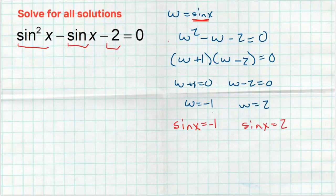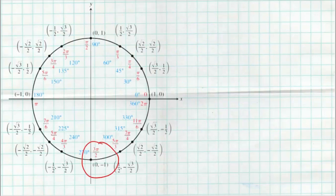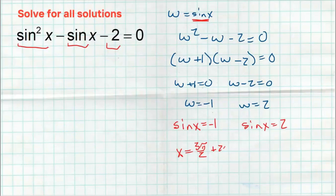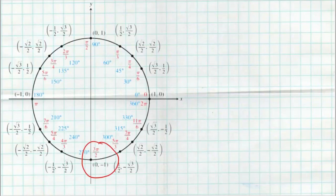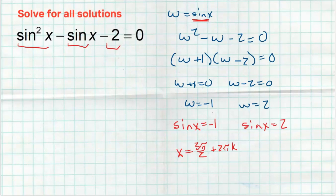Where is sine of x equal to negative one? That happens at three pi over two. Since it wants all solutions, every full circle rotation gives another answer, so three pi over two plus two pi·k. Now what about sine of x equals two? If you look at your unit circle, that doesn't happen anywhere. Remember, the range for sine and cosine is negative one to one, so sine of x will never equal two. So this second equation has no solutions.